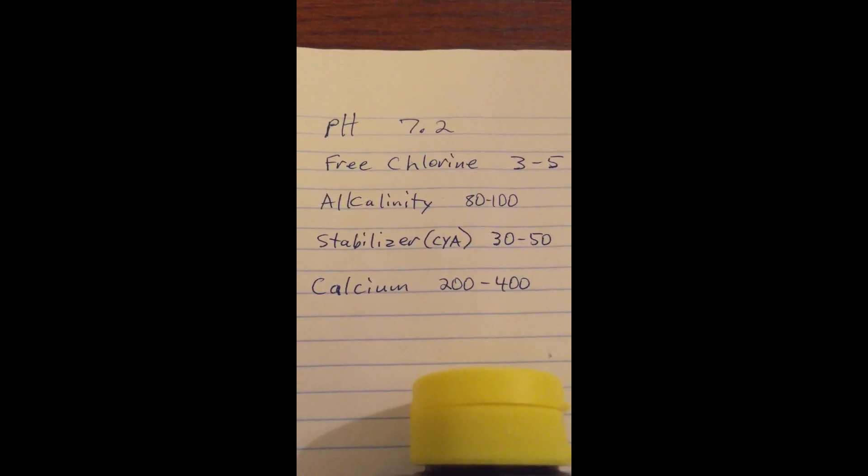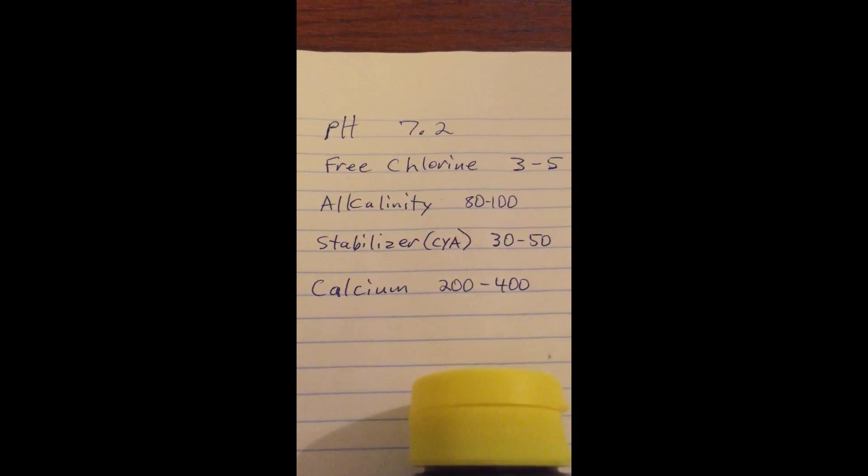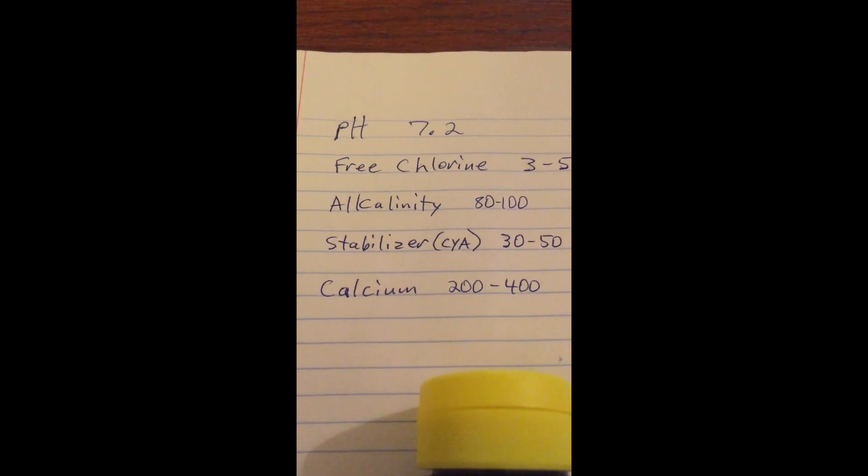If you bottom all the way out to like a 6.2 or something, that's too low. There's specific stuff called pH increaser that you can put in the pool to bring your pH back up.